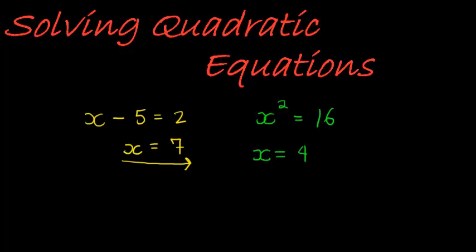The only problem here is that it's not the only answer. There's another number that I can multiply by itself to get 16. And it might take you a while to figure it out, but it's actually quite simple. The number negative 4. Negative 4 times negative 4 becomes positive 16. So it's another solution. So quadratic equations can have up to two solutions.